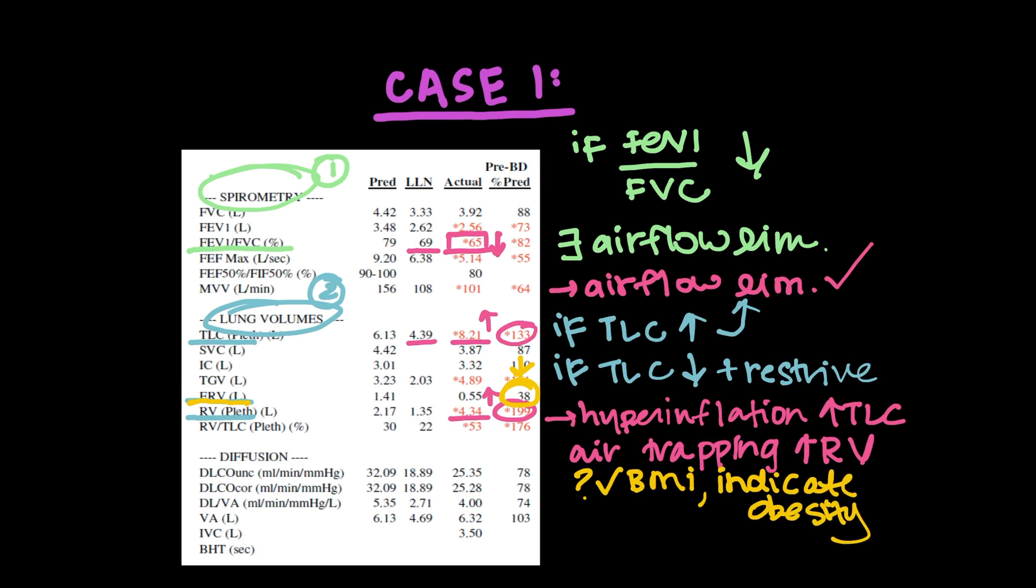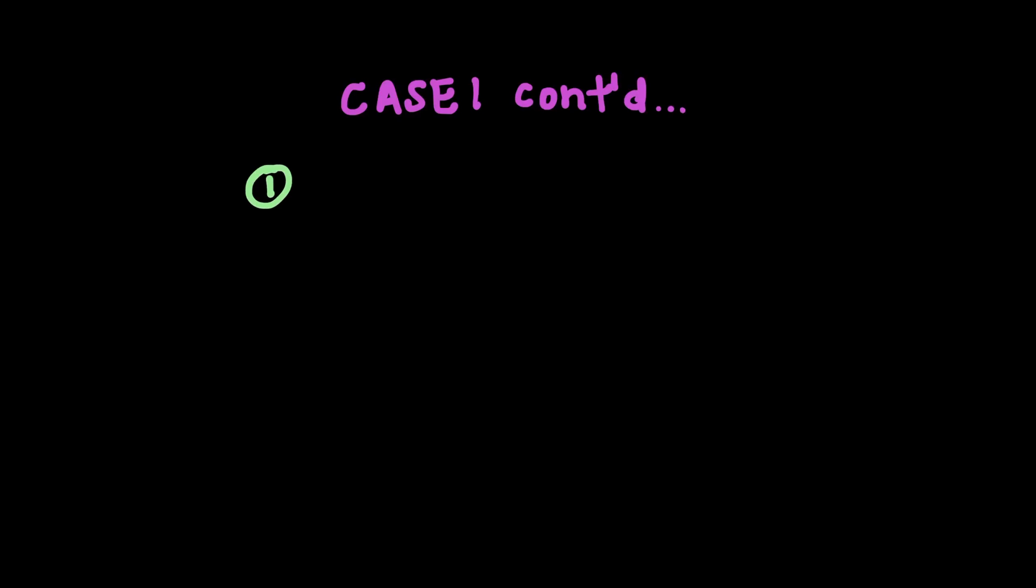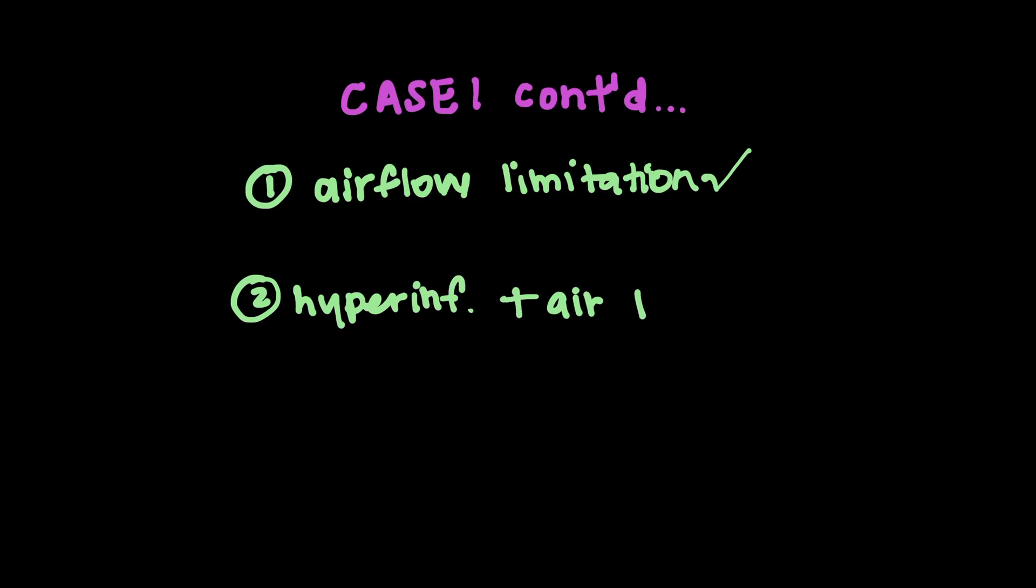So the last and third thing I want to look at is a diffusion capacity, and that's the DLCO we talked about in the last lecture. So this person's lower limit of normal is 18 and their actual is 25. So they have a normal DLCO. So we can just say that there's no diffusion issue going on with this patient. So in summary, one, we definitely have an airflow limitation present, and we can tell that from spirometry. Number two, based on volumes, we have both hyperinflation by the TLC plus air trapping by the RV.